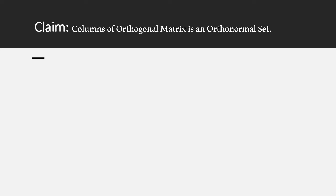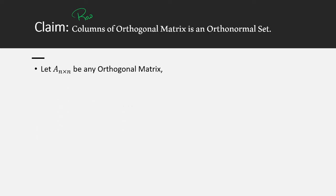Now if we have this in hand, we can start the proof. My claim is to prove that the columns of an orthogonal matrix form an orthonormal set. While seeing this proof, students can think about how a similar proof would work if we talked about rows instead of columns. So let's just work on this. I take any orthogonal matrix — let A be any orthogonal matrix.